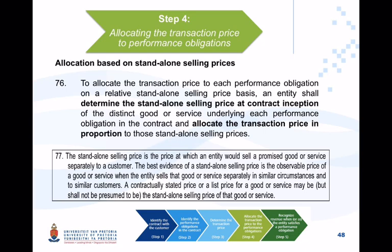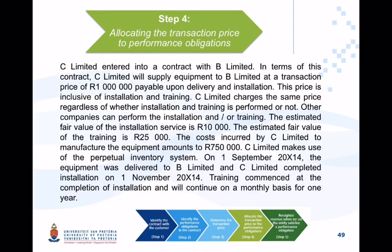The calculation of the apportionment is done at the inception of the contract. Consider the following example: C Limited entered into a contract with B Limited. In terms of this contract, C Limited will supply equipment to B Limited at a transaction price of 1 million Rand, payable upon delivery and installation. It appears there is a contract with a customer and that the performance obligation is the supplying of this equipment.